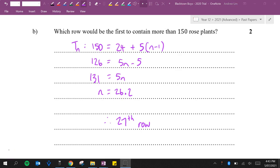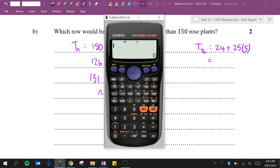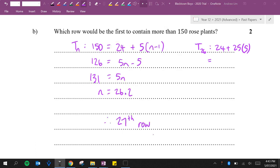Okay, if you have time in the exam to double check your answer, you can. So what I would do is I would just say, how many would there have been in the 26th row? So the 26th row has only 149 rose plants. Therefore, the 27th row will have 154 because it's 5 more.